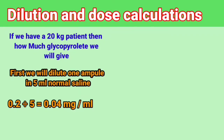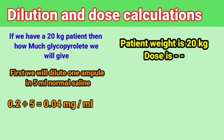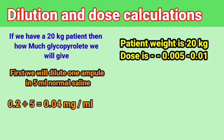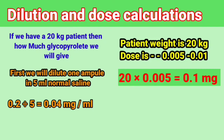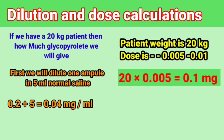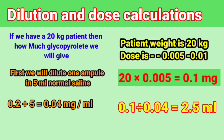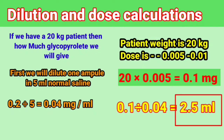Now we calculate the dose. Patient weight is 20 kg. We know that in the diluted drug, 1 ml contains 0.04 mg. So 0.1 mg will be present in how much ml? We divide 0.1 mg by 0.04, and the answer is 2.5 ml. It means we can give 2.5 ml of glycopyrrolate from the diluted syringe to a 20 kg patient.